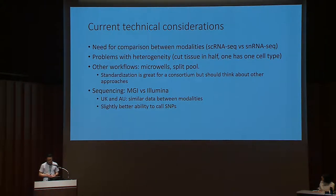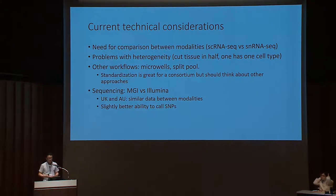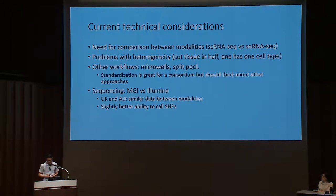We also discussed other alternative workflows. Gouji made a great point that for a community like this, standardization is really great, and it's wonderful that many of us are using just a few protocols so we can compare data across tissues. But we should be cognizant of other workflows, mostly because some have potential to really scale — including the microwell workflows as well as the split pool combinatorial indexing approaches that the University of Washington groups have been developing.